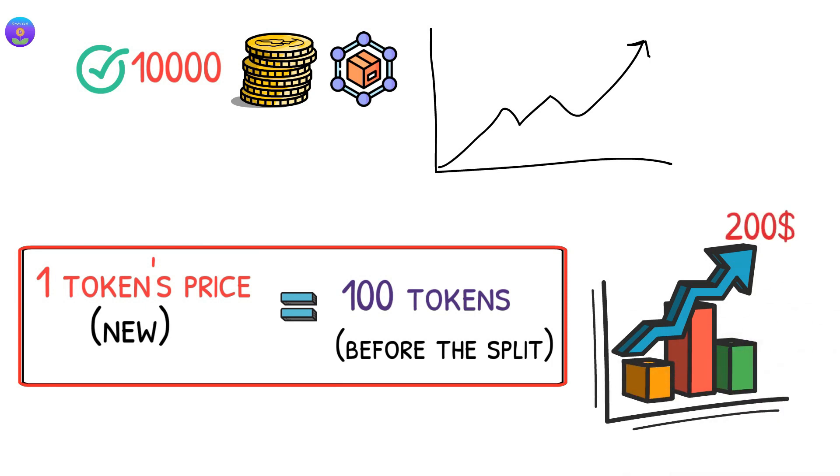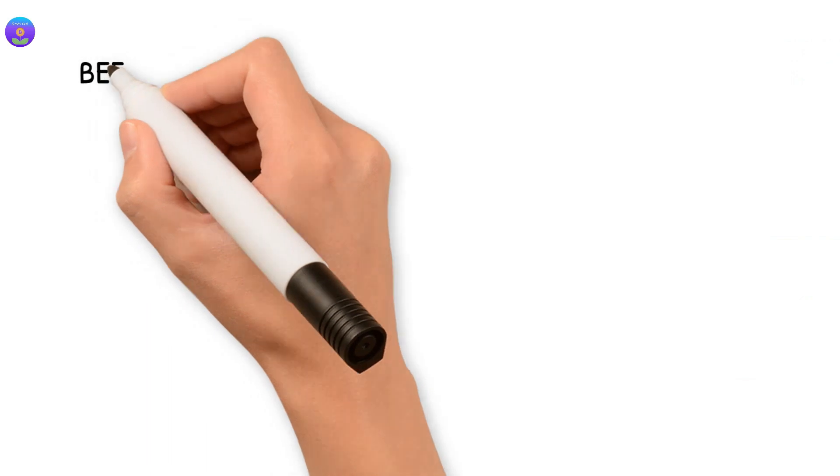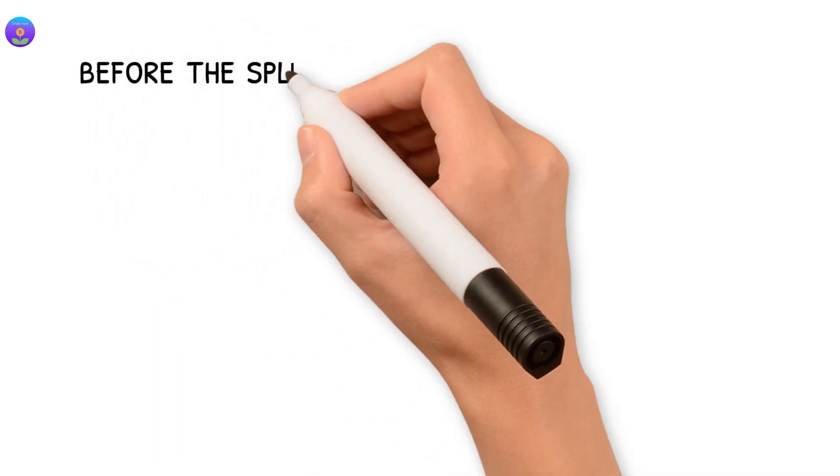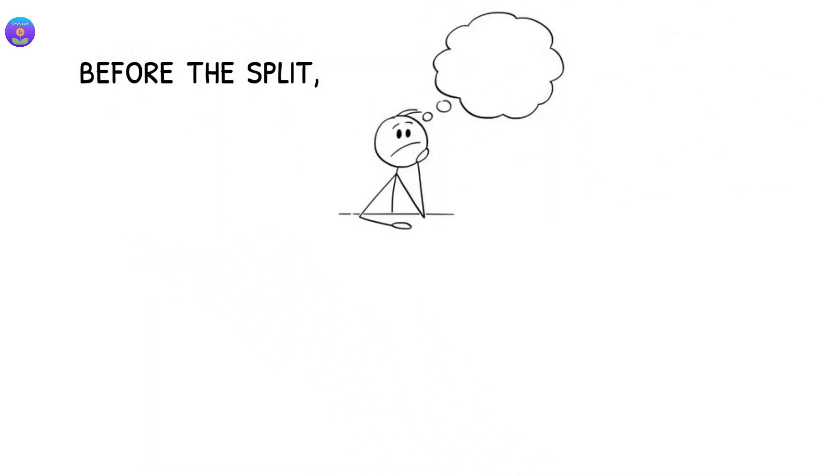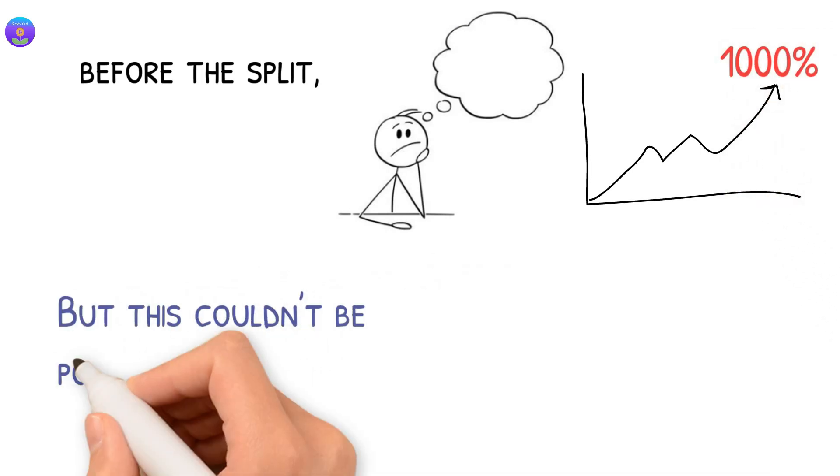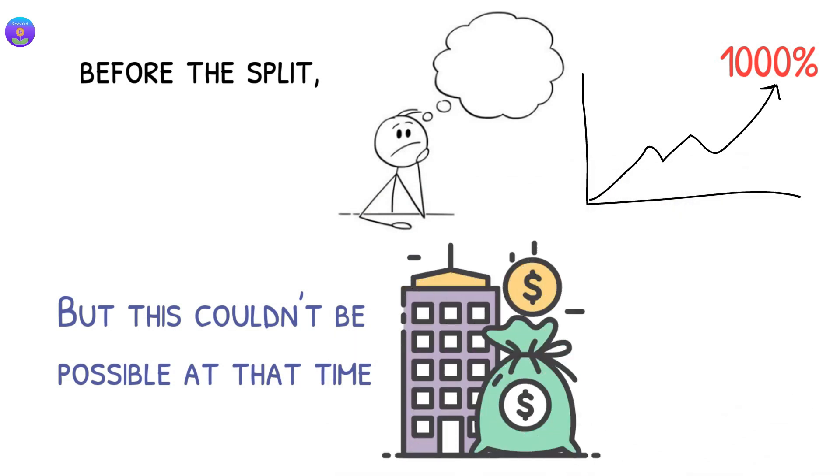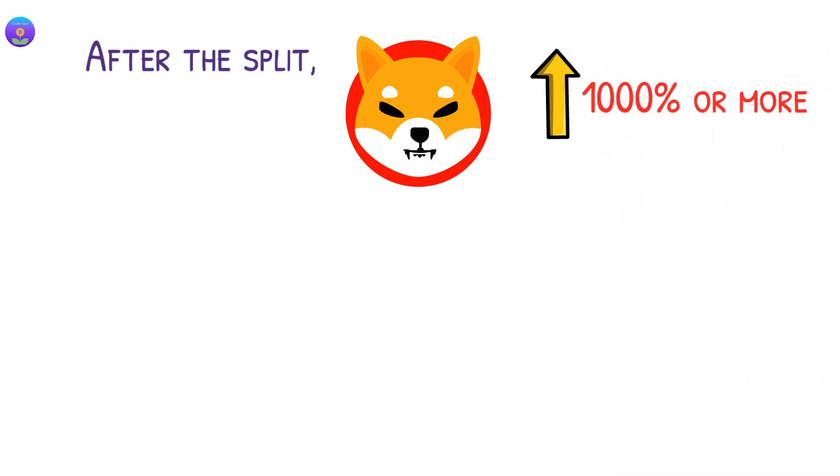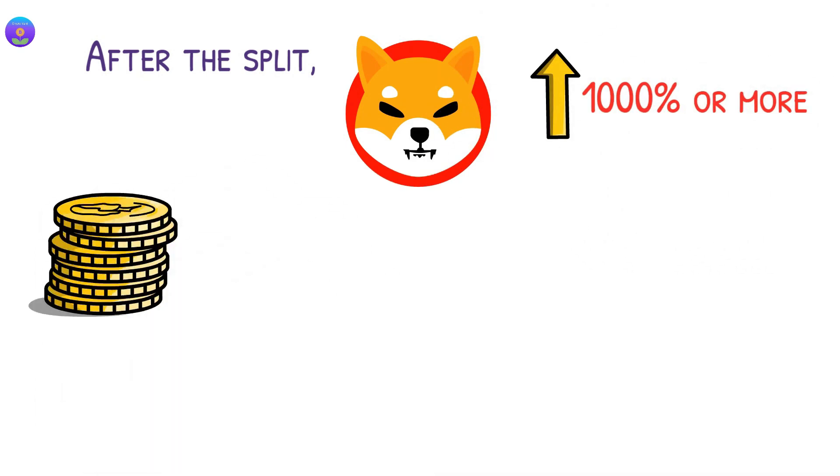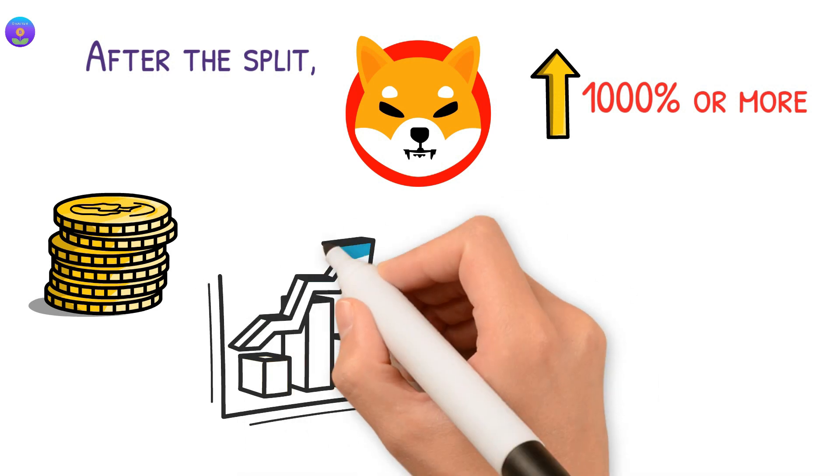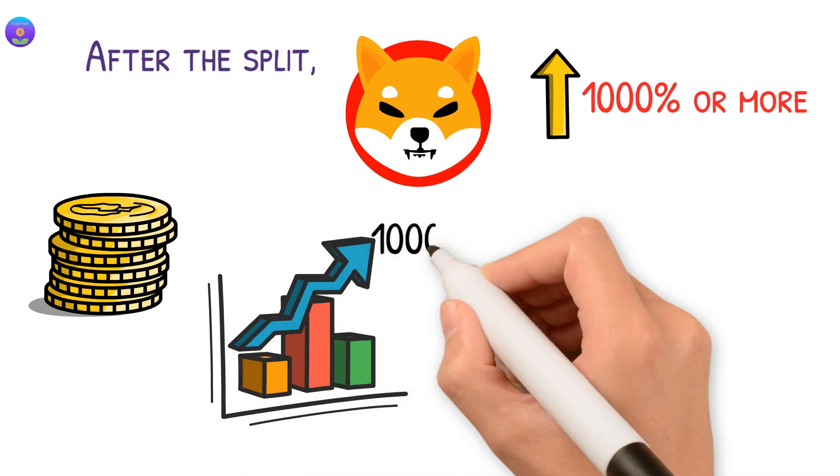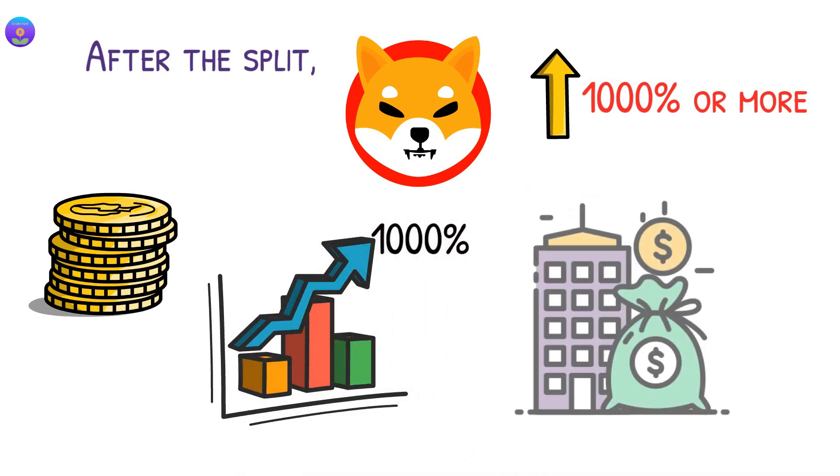So your new 1 token price that is in your wallet will be equal to all the 100 tokens before the split. Now the price has the ability to go higher than $200. So basically, you will be more concerned about the percentage of increment. For example, before the split, you hoped for the price to increase by one thousand percent. But this couldn't be possible at that time because the market cap would be huge. After the split, the token will be able to increase by one thousand percent or more because there are few tokens available.